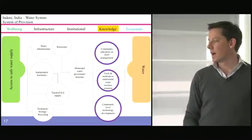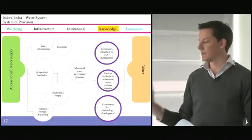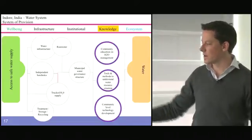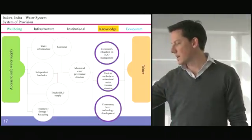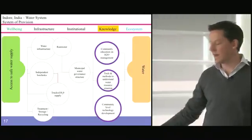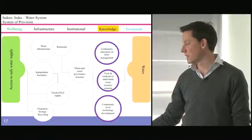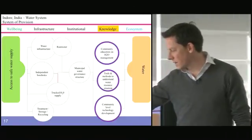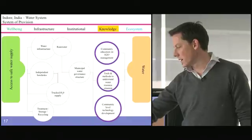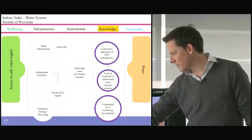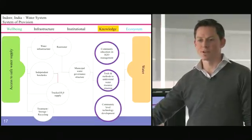What we have tried to do from an urban systems perspective is, if you think about the hamburger, turn it on its side. So this is the particular outcome that you're trying to achieve, access to safe water supply. And you've got an ecosystem at this end. This might be several ecosystems, this might be several sources of water. You have infrastructure that we've talked about. We have the water infrastructure, the pipes, the boreholes. You've got trucked water and treatment storage recycling.